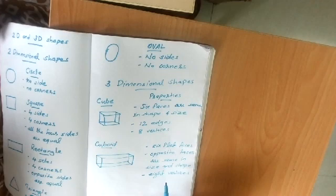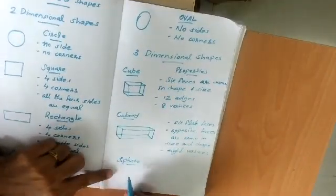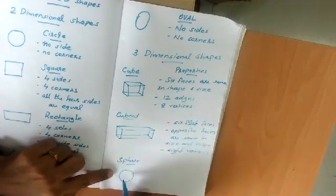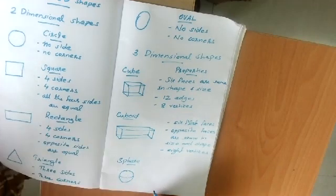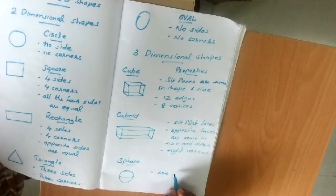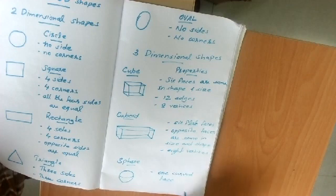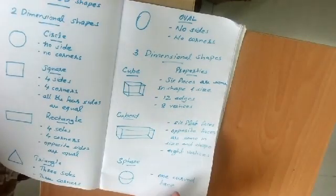The next 3D shape is the sphere. For example, a ball is a sphere. A sphere has only one face, and that is a curved face. So a sphere has only one curved face.